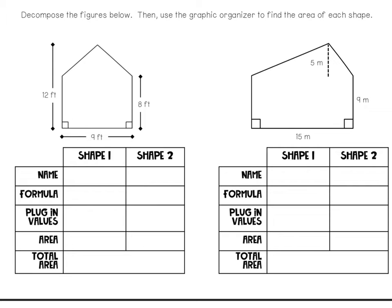Today we're going to look more at composite shapes. We were already doing some of this last week, where you divide a shape into two separate shapes and find the total area. If you think you can do this without the video, go ahead and start filling in on your own and check it with the video. If you need to follow along, just keep listening.